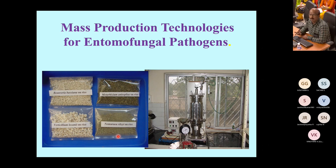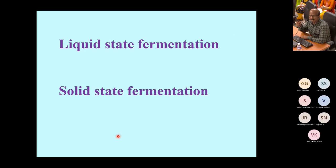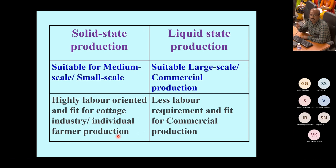Coming to mass production technology, we have developed three different formulations: talc-based, oil-based, and rice-based. In liquid state and solid state fermentation, solid state is suitable for medium and small scale — we give training to farmers for this. Liquid state fermentation is for large-scale commercial production by biopesticide companies.